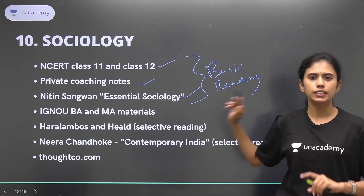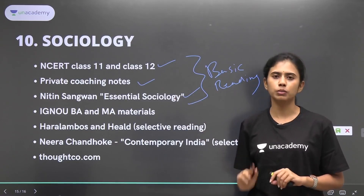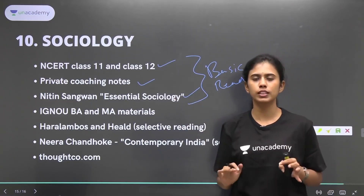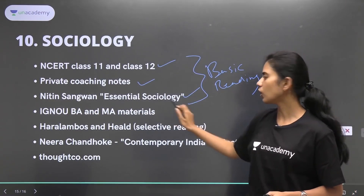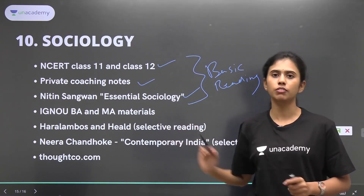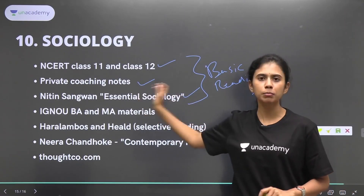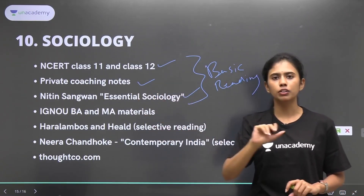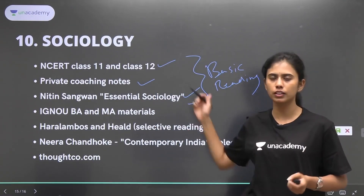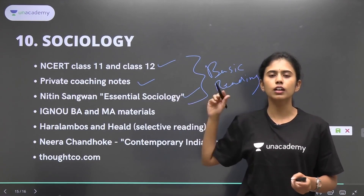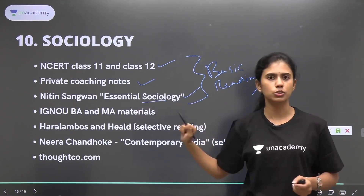I had attended a private coaching in Trivandrum, so I had my coaching notes with me, which form the basic notes I would use for the syllabus. Then there is this book called Essential Sociology by Nitin Sanghwan sir, which is very important. What happens with private coaching notes is that you have a lot of holes in the syllabus — a lot of topics are not usually covered. So whatever was not covered in class, I would cover it from Essential Sociology.